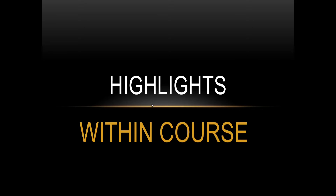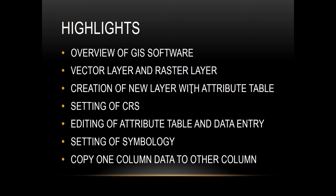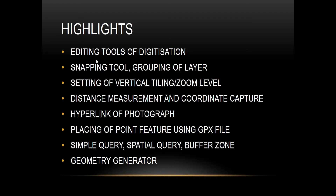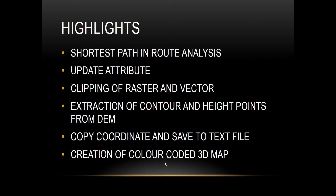Hello friends, welcome to the basic QGIS course. In this chapter we have learned vector layer and raster layer creation, new layer with attribute table, setting of CRS, editing of attribute table and data entry. We haven't touched the symbology point yet — I will make a separate video for that as it's a large chapter. Other topics covered include copy column data to another column, editing tools of digitization, snapping tool, grouping of layers, setting of vertical tiling and zoom level, distance management and coordinate capture, hyperlinking of photographs, placing a point feature using a GPX or CSV file, simple query, spatial query, buffer query. We had left geometry generator, and today we will learn shortest path in route analysis.